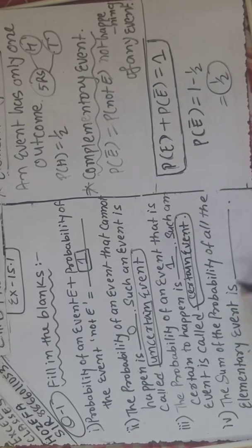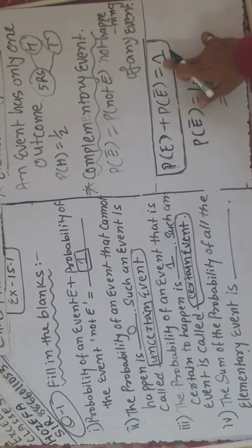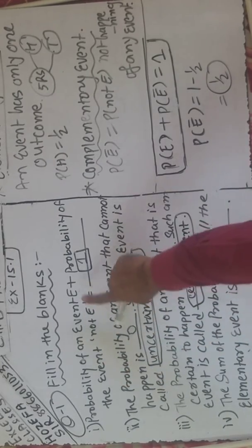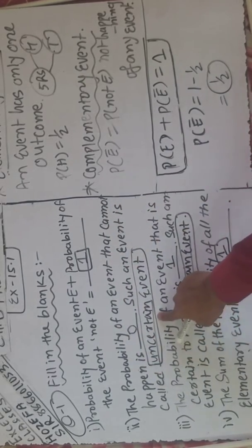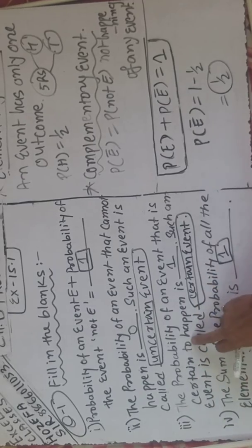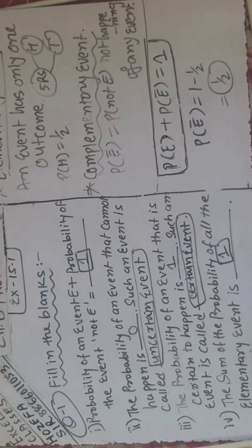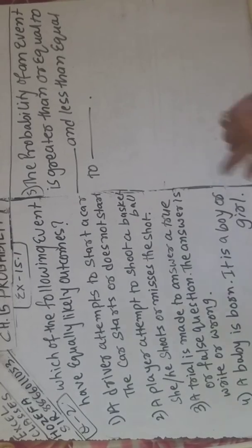And sum of the probability of all the elementary events — jo bhi probability hai, happening or not happening, dono ka sum phir se kya hoga? One. Toh yahan pe bhi answer kya aayega — one. Because the sum of the probability of all the elementary events is 1.